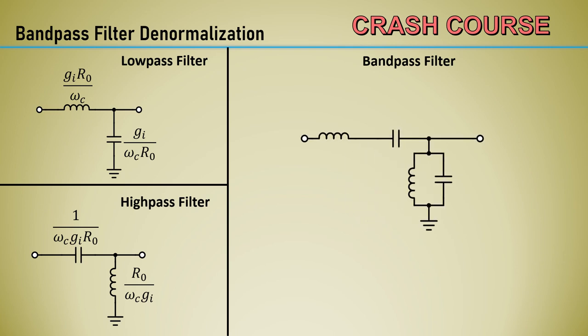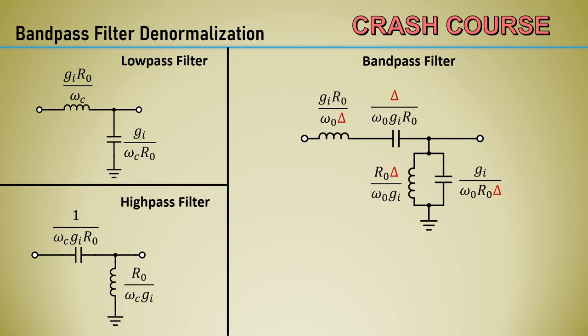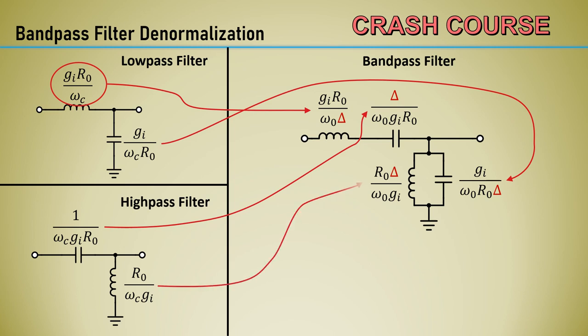On the left for reference are the low-pass and high-pass topologies and their associated denormalization equations. Here is the topology of the bandpass filter. Delta is now in all the denormalization equations and I highlighted it in red to stand out. It's very much like a low-pass and high-pass blended together and the denormalization equations should make that even more clear. For the low-pass, the series inductor was G sub i times the impedance R0 over omega c. The series inductor for the bandpass is the same, but the delta is in the denominator. The shunt capacitor in the low-pass has the same denormalization with delta also in the denominator. The high-pass series capacitor denormalization is the same as the bandpass with delta in the numerator. The shunt inductor in the high-pass is like the shunt inductor of the bandpass with delta also in the numerator.